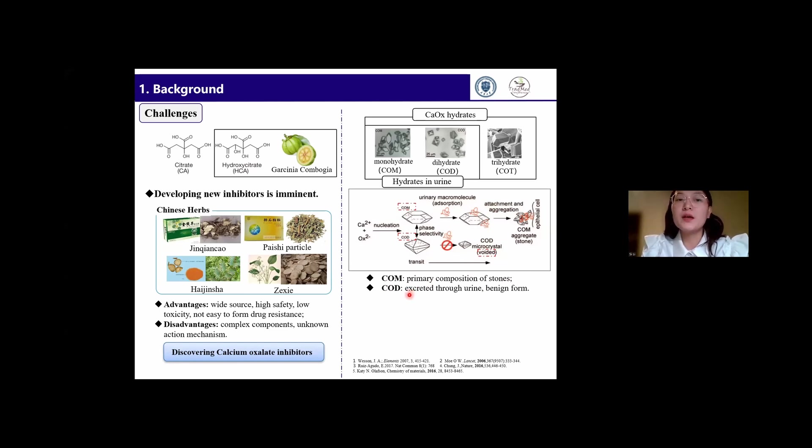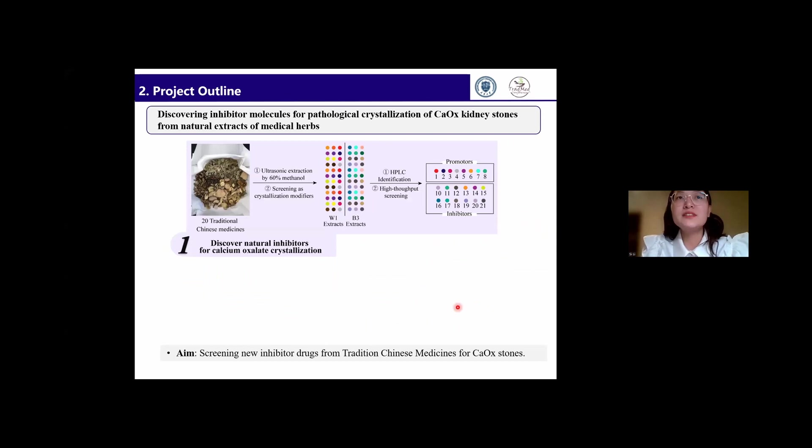Thus, we can emphasize that new inhibitors need two major characteristics: they can inhibit the nucleation and growth of COM, or they can promote the nucleation of COD.